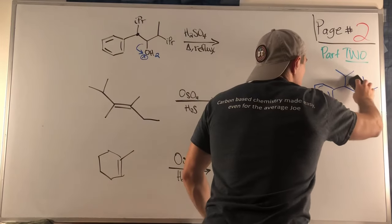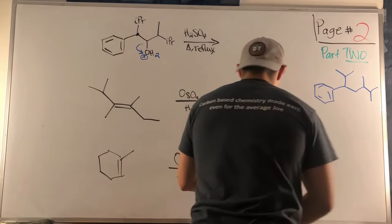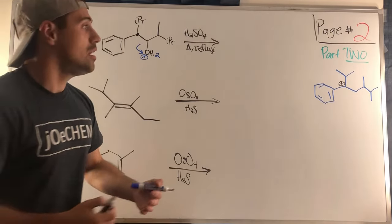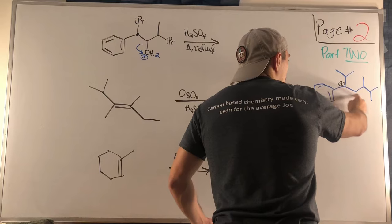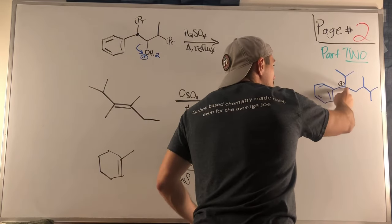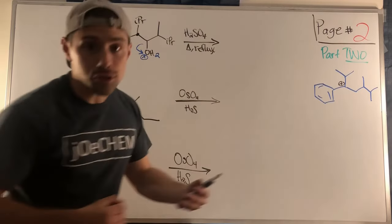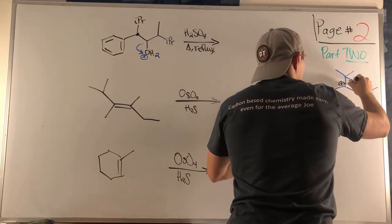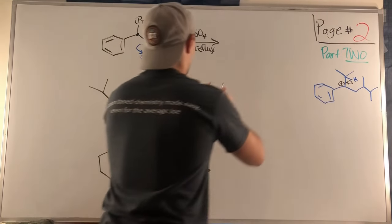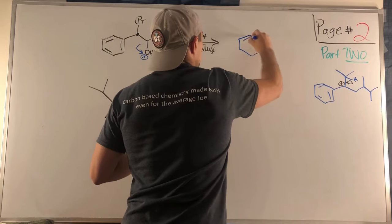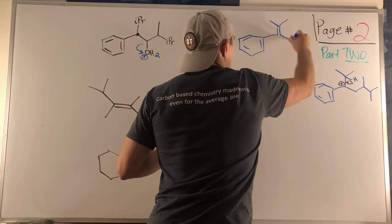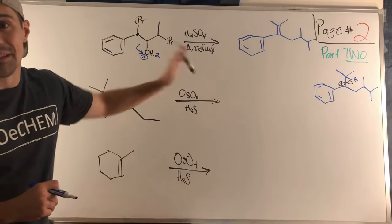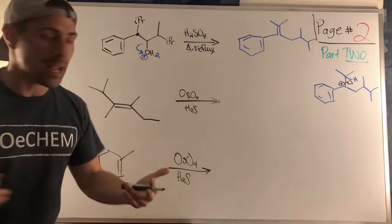With the carbocation now at the benzylic tertiary position, we want to make the most substituted double bond for E1. We could make a trisubstituted double bond one way, but we now have the ability to make a tertiary–tertiary double bond. Something picks up that proton and that H is eliminated, giving our final product — a fully conjugated, highly substituted alkene.